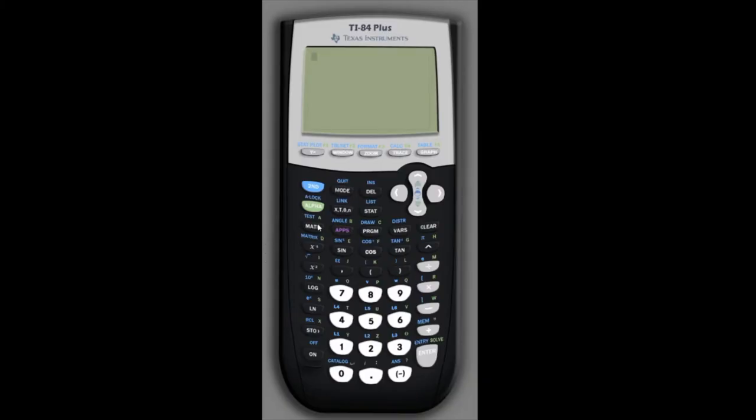On the calculator we want to open the math menu so we'll use the math button and then we want to use the random number generator which is part of the probability tool set. Notice this prb menu up here if we scroll to the right we get the probability menu.